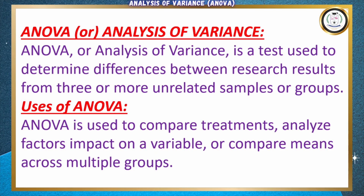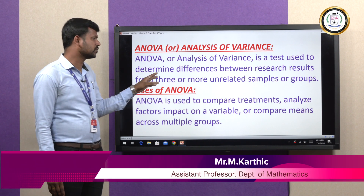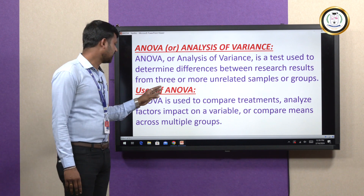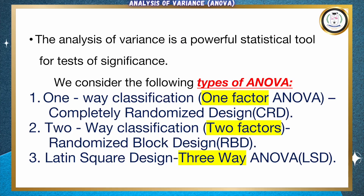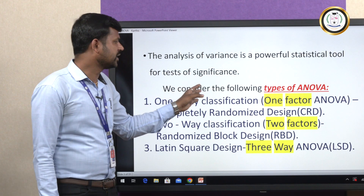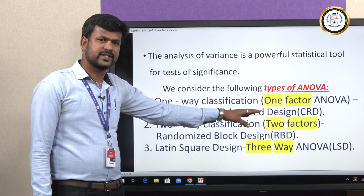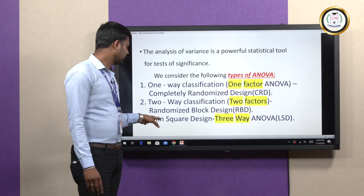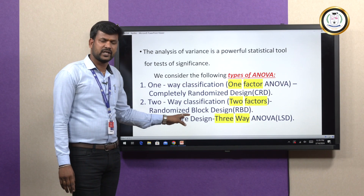Generally, ANOVA is a test used to determine differences between research results from three or more unrelated samples or groups. In real life, ANOVA is used to compare treatments, analyze factors, impact on a variable, or compare means across multiple groups. It has three types: one-way, two-way and three-way. One-way is considered as Completely Randomized Design (CRD), two-way is considered as Randomized Block Design (RBD), and the famous one is LSD — Latin Square Design.